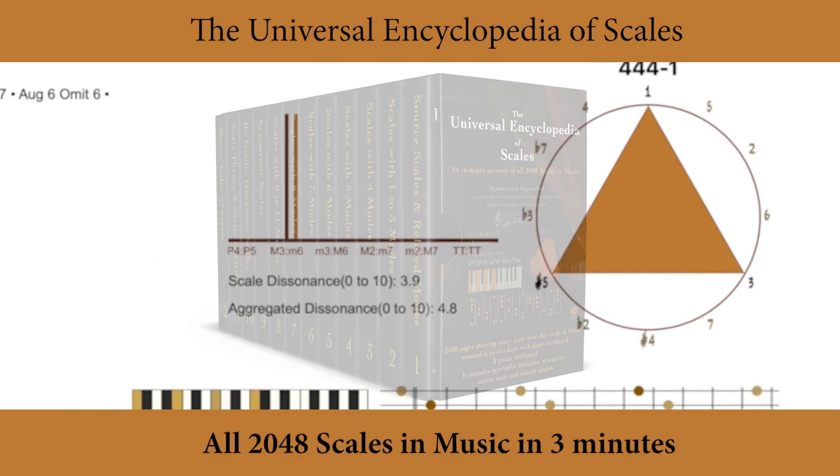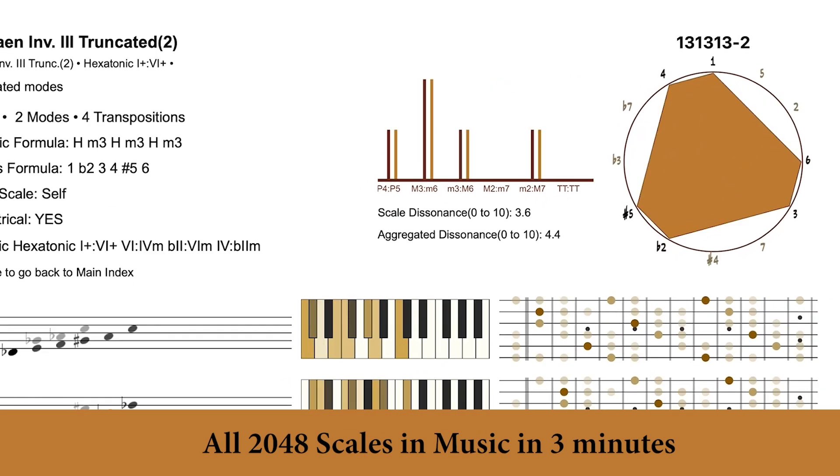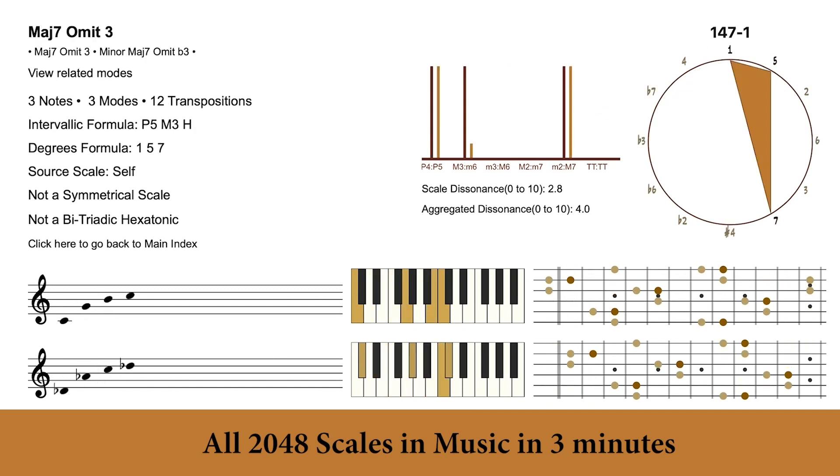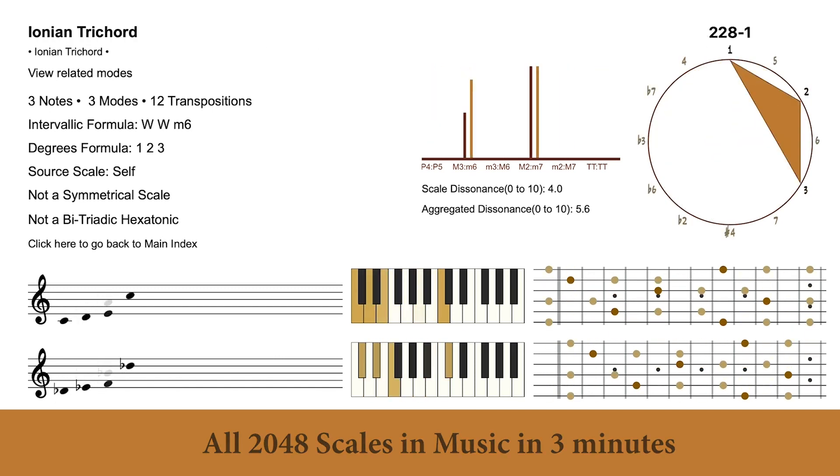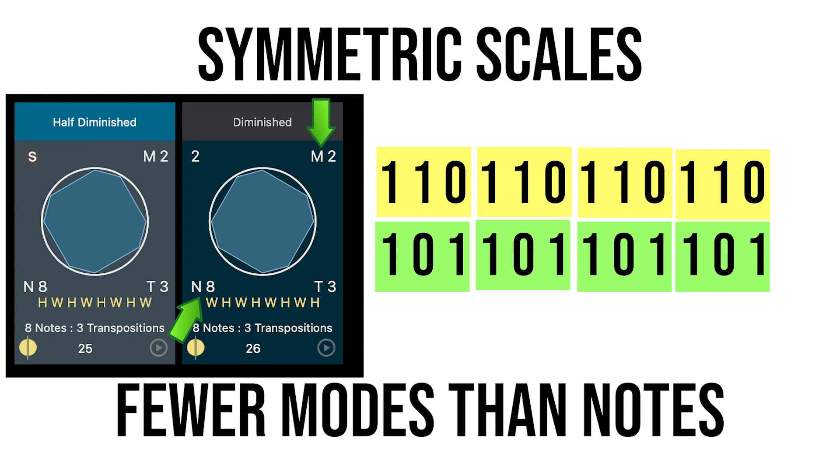There are 2,048 scale formulas in music. So the number of scale formulas in music will always be 2,048. That's why we know we have all of the scales in music within the Universal Encyclopedia of Scales. Also, we can find all related modes by grouping the scales with shifted binary codes. And we can also find symmetric scales because they have fewer modes than notes, which means there are fewer binary codes than notes in the scale.